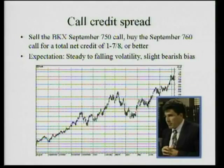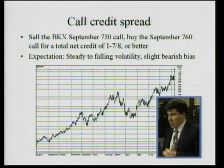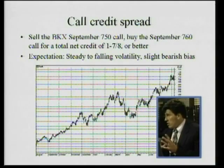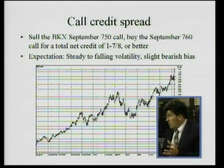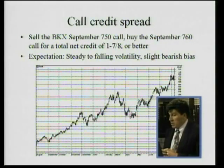Now it's thundering and we want the clouds to pass. In this instance, we're looking at the bank stock index, and we're looking at calls again. We are going to sell the September 750 call and buy the September 760 call for a total net credit of one and seven-eighths. Profits and losses are calculated pretty similarly — it's the difference between the strike prices, but since you're getting the credit for putting on the trade, it's the difference between strike prices minus the credit. So our risk would be 760 minus 750 = 10, minus one and seven-eighths, which is eight and an eighth. That's our risk potential versus our reward potential of one and seven-eighths.